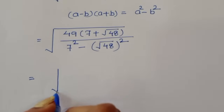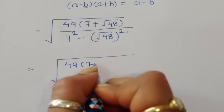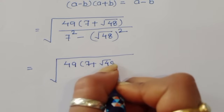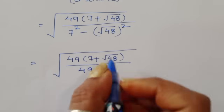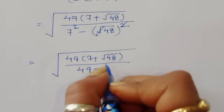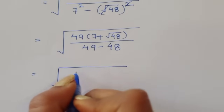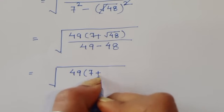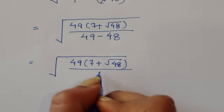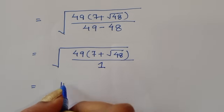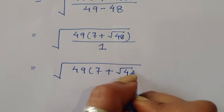So we get 49 times 7 plus square root of 48 divided by 7 squared minus square root of 48 squared. The square and square root cancel, leaving 48. So the denominator is 49 minus 48, which equals 1.